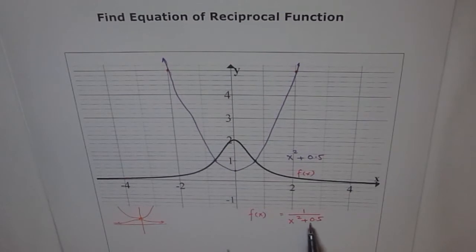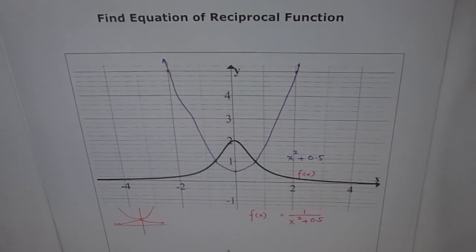Notice that the denominator cannot be zero since there is no real zero, since x squared cannot be negative 0.5. X squared is always positive. So that's the equation which we are looking for. I hope you understand. Thank you.